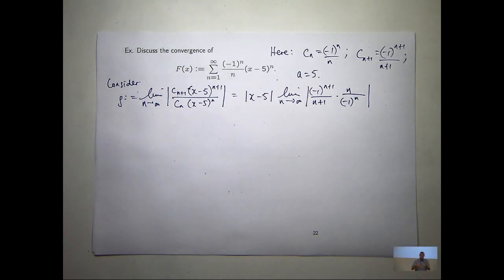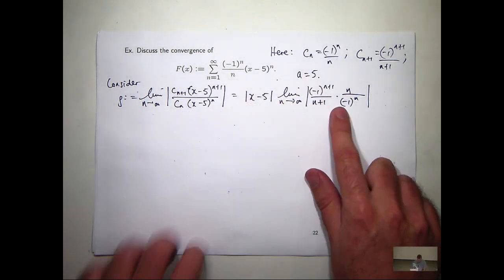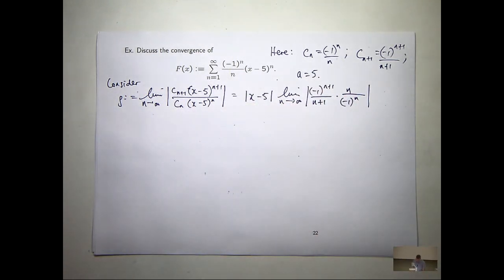Now, those minus 1 to the n's and minus 1 to the n plus 1's, can anyone tell me why are they going to disappear? Why can't I just get rid of these straight away, this and this? Or just absolute values. If you take the absolute value, it's got to be 1, right? Sure, yeah, that's fine as well.